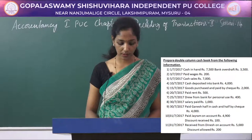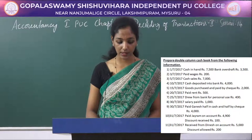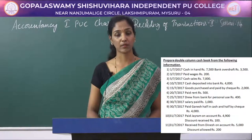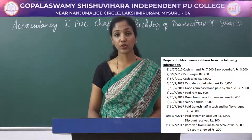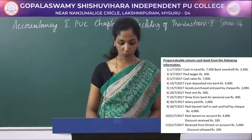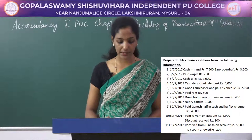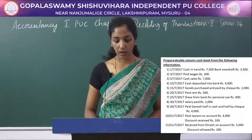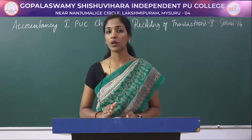27/7/2017: paid rent rupees 500. 25/7/2017: drew from bank for personal use rupees 400. 30/7/2017: salary paid rupees 1000. 30/7/2017: paid Ganesh, part in cash and part by cheque, rupees 4000. 31/7/2017: paid to Jayram on account, discount received rupees 100. 31/7/2017: received from Dinesh on account rupees 5000, discount allowed rupees 200.